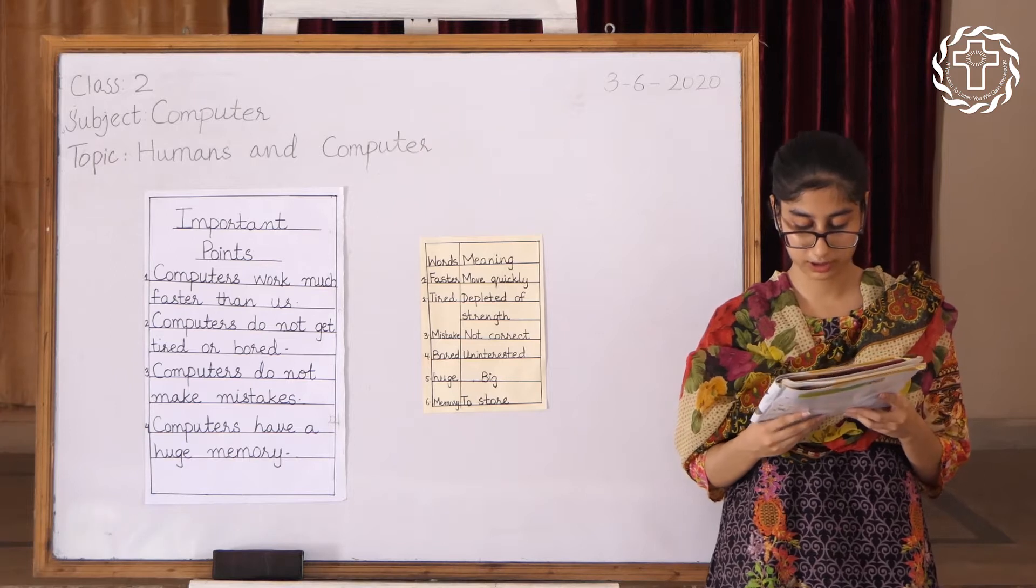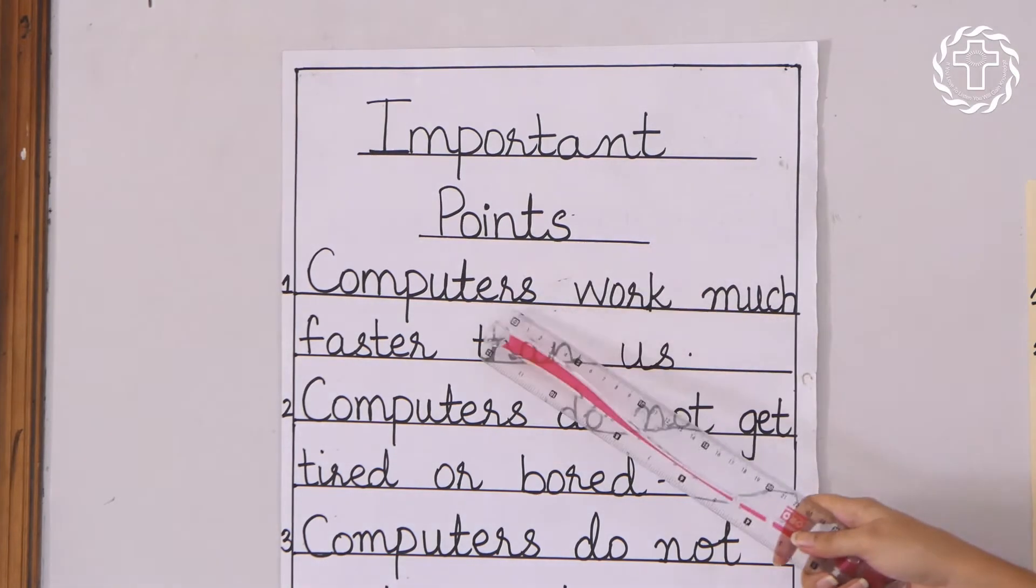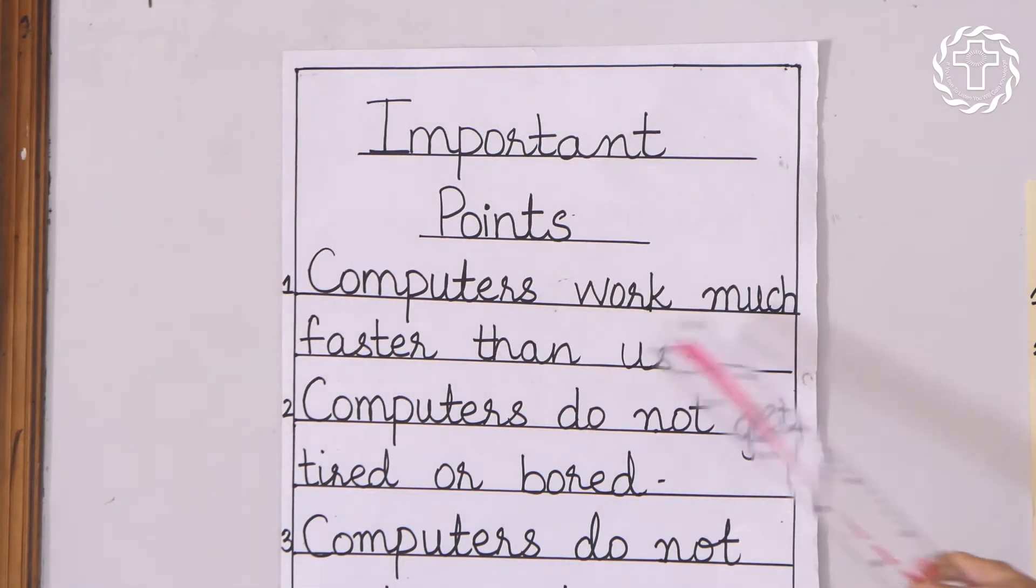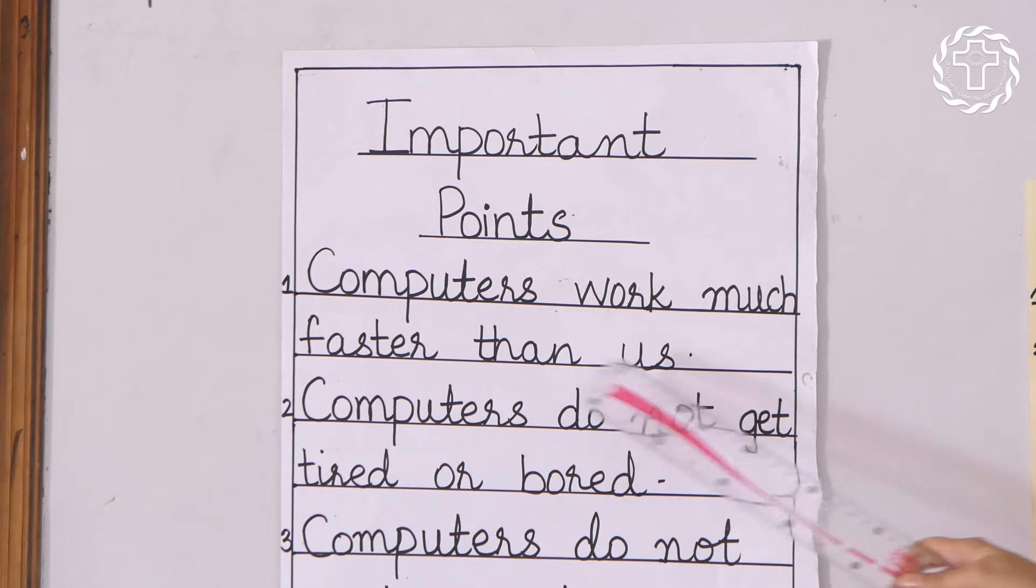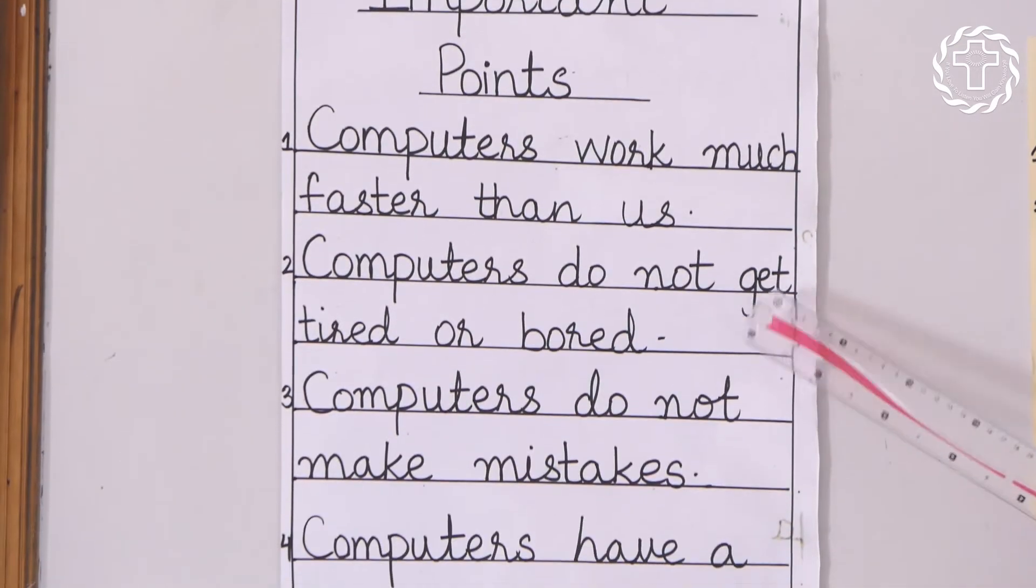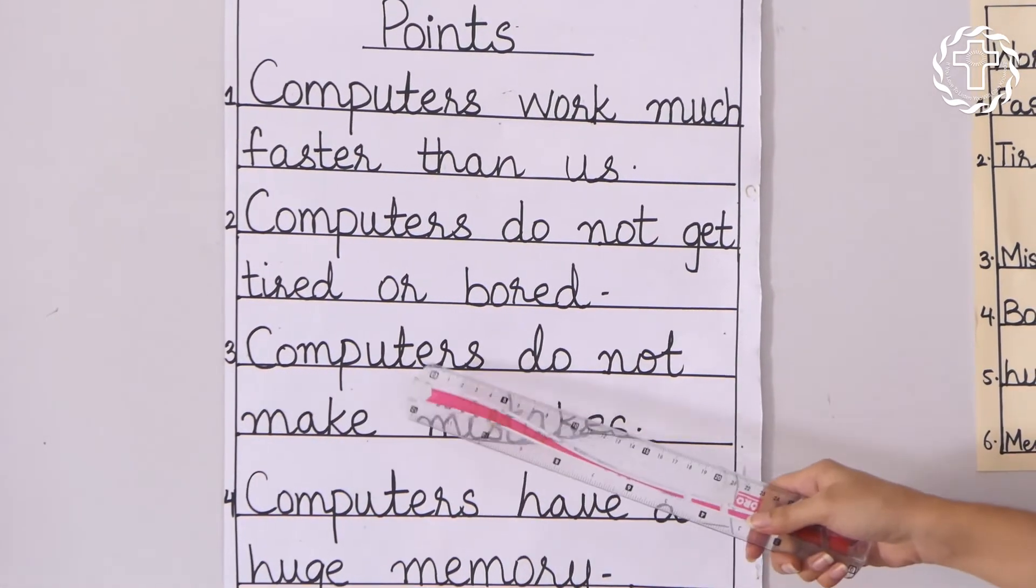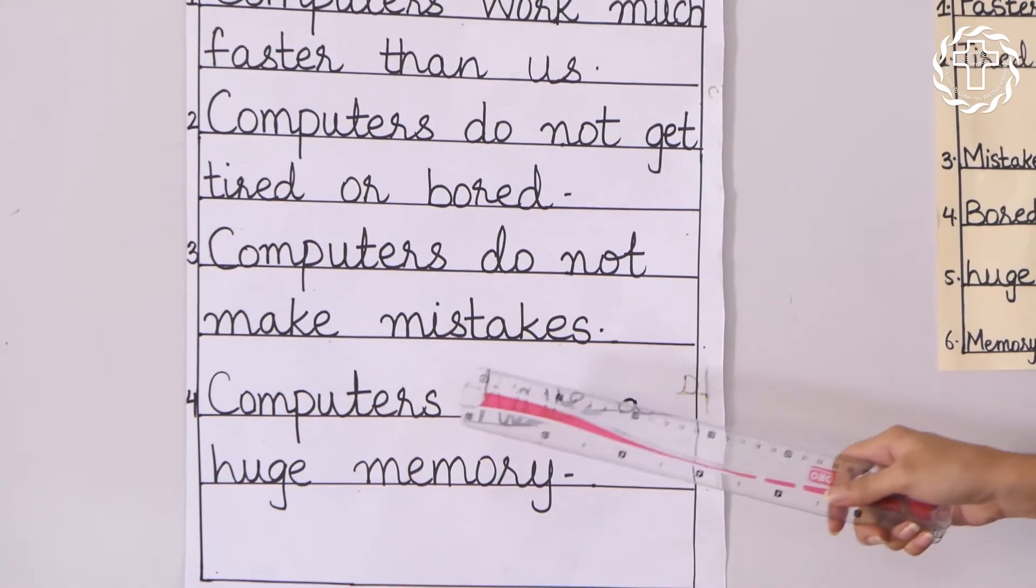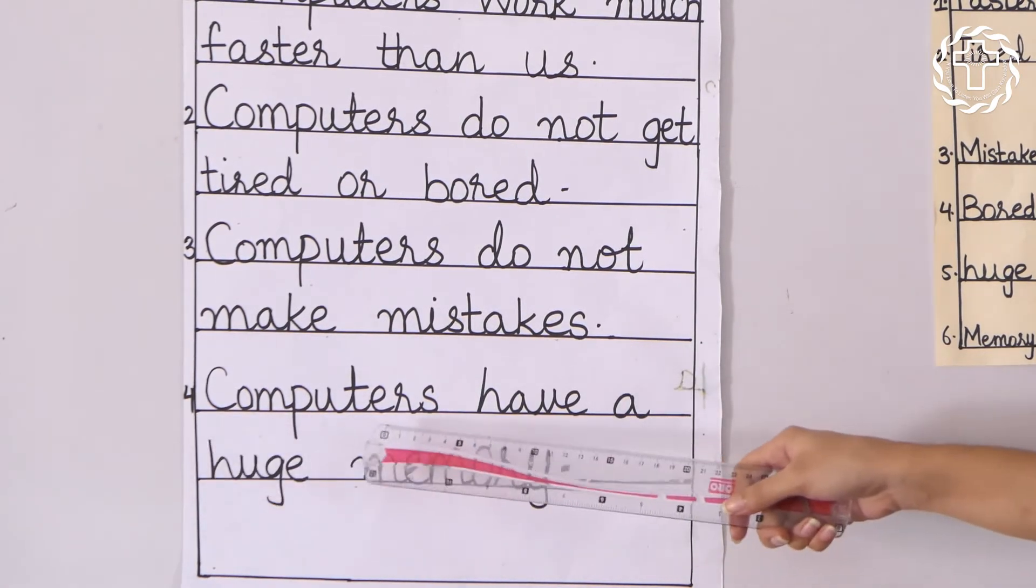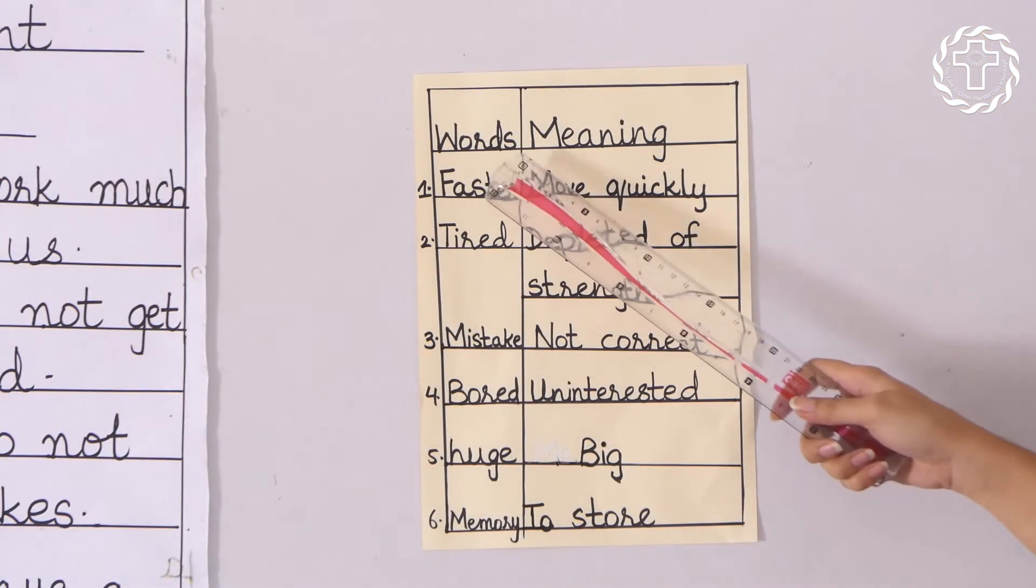Important points: computers work much faster than us. Number two: computers do not get tired or bored. Number three: computers do not make mistakes. Number four: computers have a huge memory.